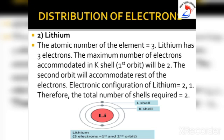Consider the lithium atom. The atomic number of lithium is 3, so it has 3 electrons. Since the K shell can accommodate a maximum of 2 electrons, the first 2 electrons fill the K shell, and the third electron goes into the L shell. So the electronic configuration of lithium is 2, 1, requiring K shell and L shell.